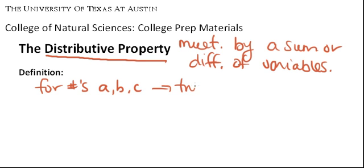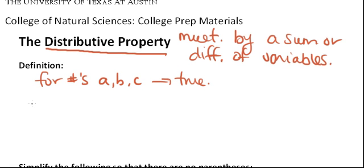This is true. And we'll write this out. So if you have a sum, a plus b, times c, then you can distribute this multiplication to the things inside the parentheses. So you'd end up with ac plus bc.